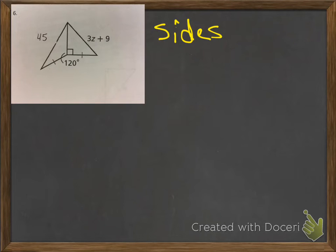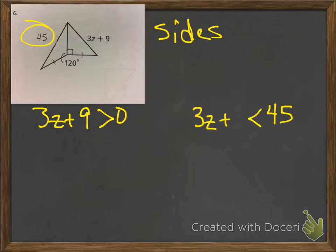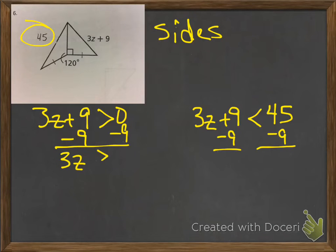Okay, this one is a side. Now notice on sides, I'm just going to keep it simple. It's going to be greater than 0 and less than the other side, which in this case is 45. And you go through the same steps. You're going to subtract, then divide. I don't know why I said add, then subtract.